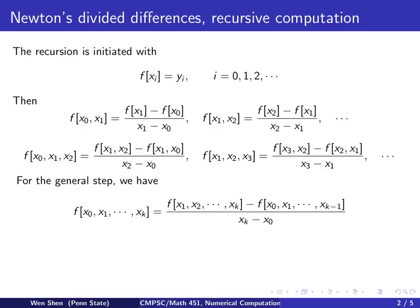For the general step, you have k plus 1 of such x sending as the independent variable for f, and this is computed by this recursive form. You first remove x0, and this will be the term on the denominator, x1, x2, all the way to xk. Then you remove the last number, xk, so it will be f of x0, x1, x2, to xk minus 1. The denominator will be the last xk minus the first, which is x0.